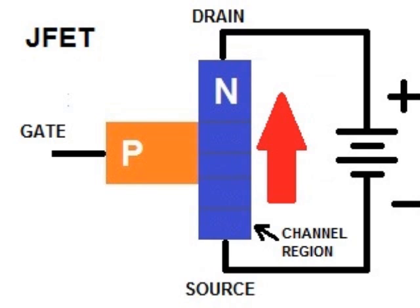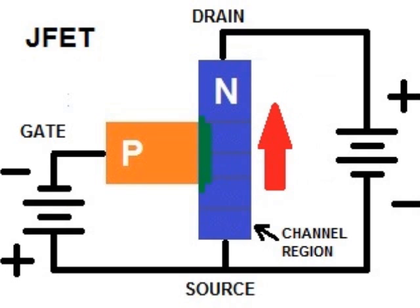However, when we reverse bias the gate, an interesting thing happens. Reverse biasing the P-N junction causes a depletion region to appear, just as it did in the diode, and part of the P and N material is converted back to being an insulator. But now, that depletion region causes the physical width of the N channel to become narrower, so less electrons can flow through the channel, which raises the resistance of the channel.